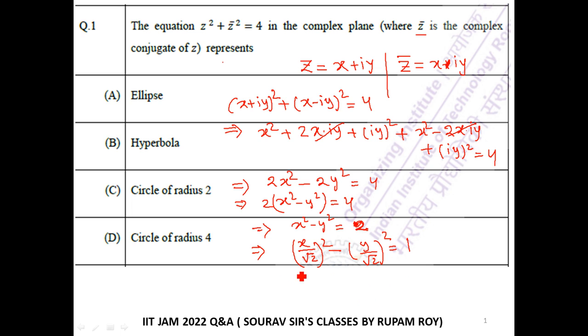This is the equation of a hyperbola. This is an equation of hyperbola. So option B is correct.